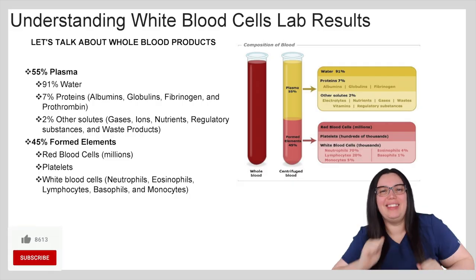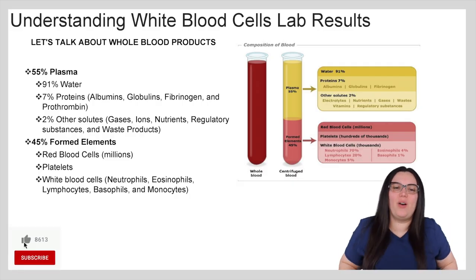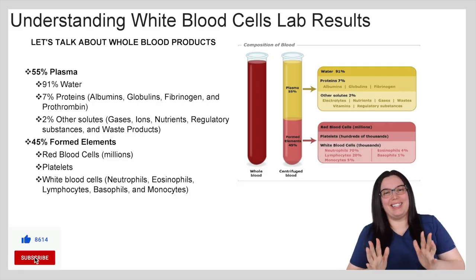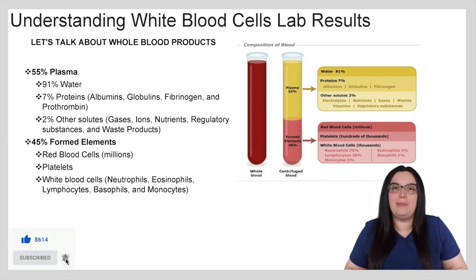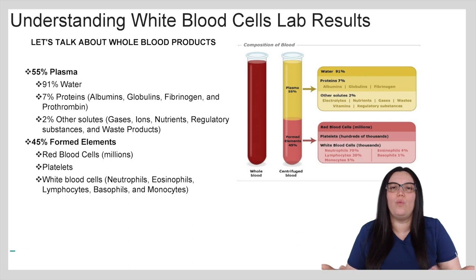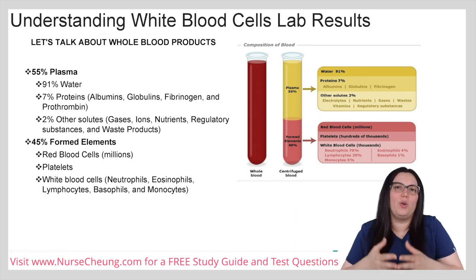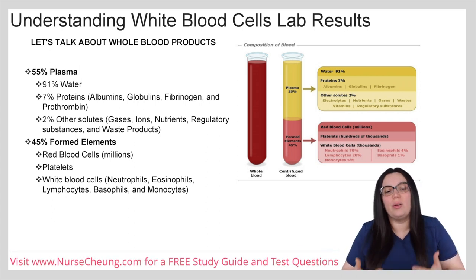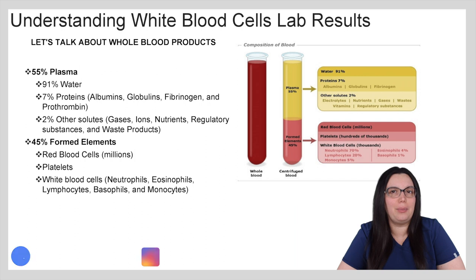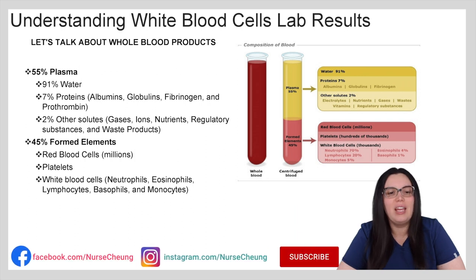To begin with, let's talk about whole blood products. When we're looking at our complete blood counts, or CBCs, this is the general overview of what's in our whole blood products. Our blood is about 55% plasma and 45% formed elements.